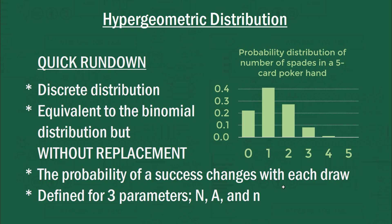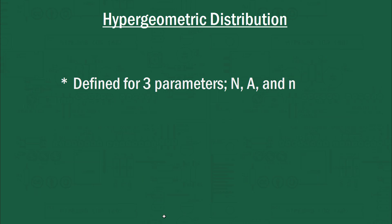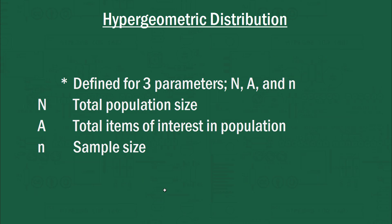This distribution is defined by three parameters: capital N, capital A, and lowercase n. For a set combination of these three values, you've got your particular hypergeometric distribution. Capital N is the total population size — in the case of a deck of cards, N is 52. Capital A is the total items of interest in the population, and if we're looking at spades in a deck of cards, that's 13. And lowercase n is the sample size — if we're dealing with a poker hand, n is five, because you select five cards out of the total 52.